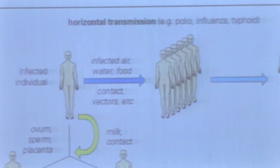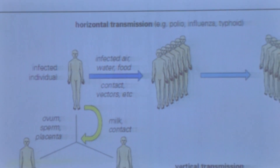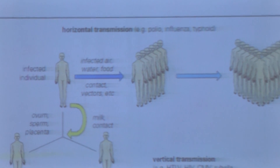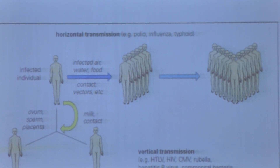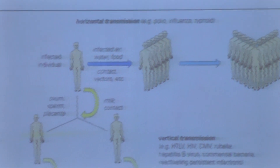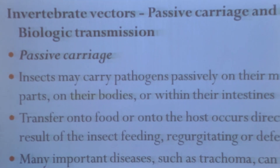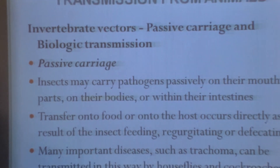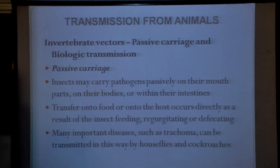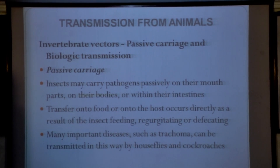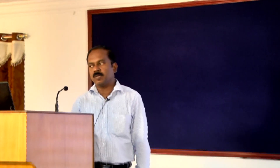We will see the details in this picture, which clearly shows how vertical transmission and horizontal transmission take place and the difference between the two types of transmission. Then we will consider another very important factor in the transmission of infection from animals. There are two types: one is called passive carriage, and another one is called biologic transmission.